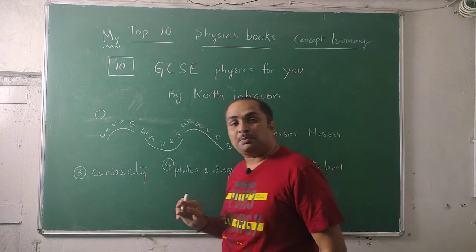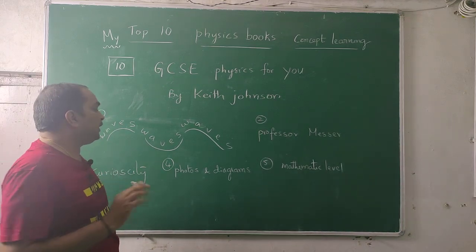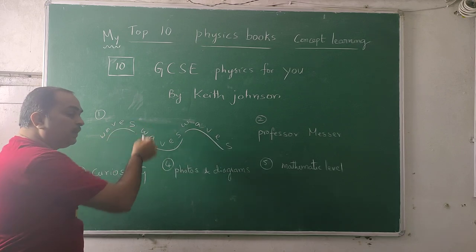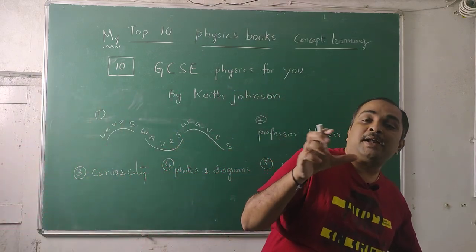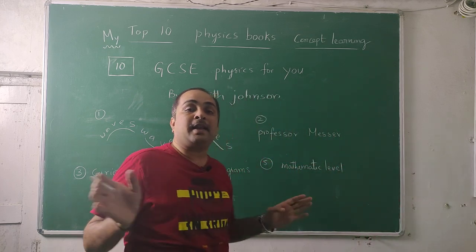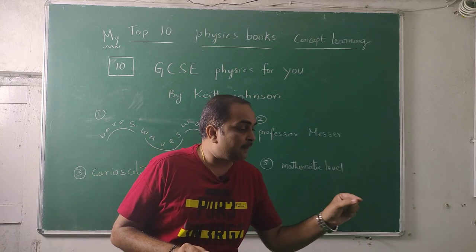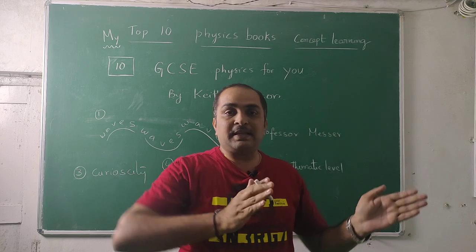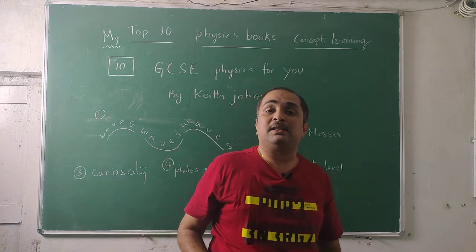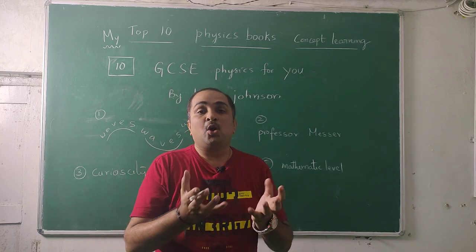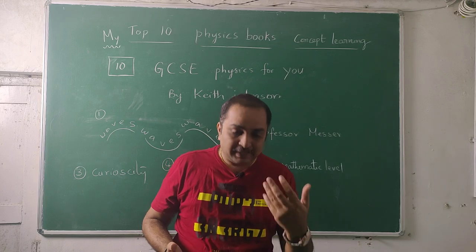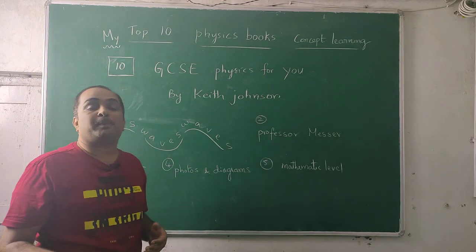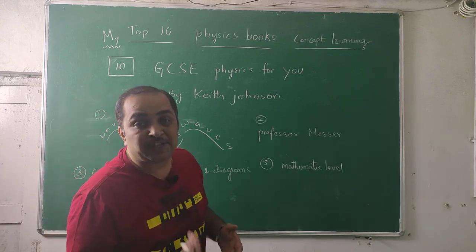The speciality I felt in this book is that it starts with a first-ball-sixer kind of thing. For example, if Keith Johnson wants to introduce the topic of waves, he will write W-A-V-E-S with equal spacing, and similarly V-E-L-O-C-I-T-Y and A-C-C-E-L-E-R-A-T-I-O-N. The heading itself grabs your attention across all 30 chapters. For any beginner, just seeing the heading makes you want to read on — it generates curiosity. If you read one page, you want to read the next. It gives energy and pleasure; it never gives you pressure.